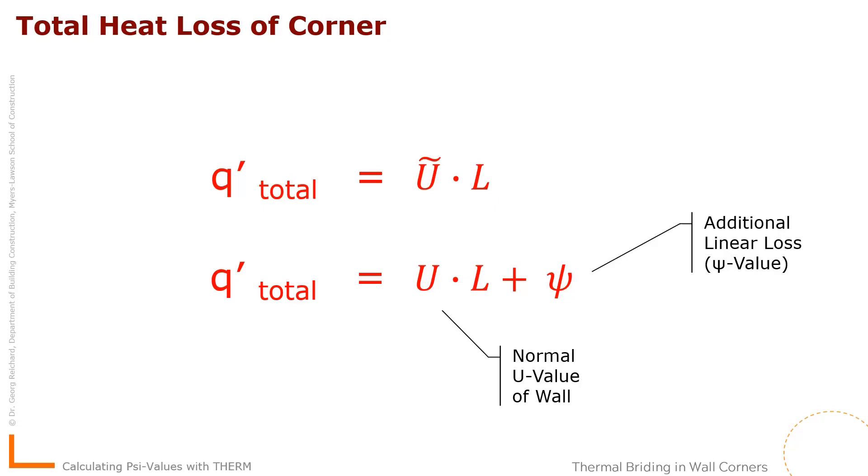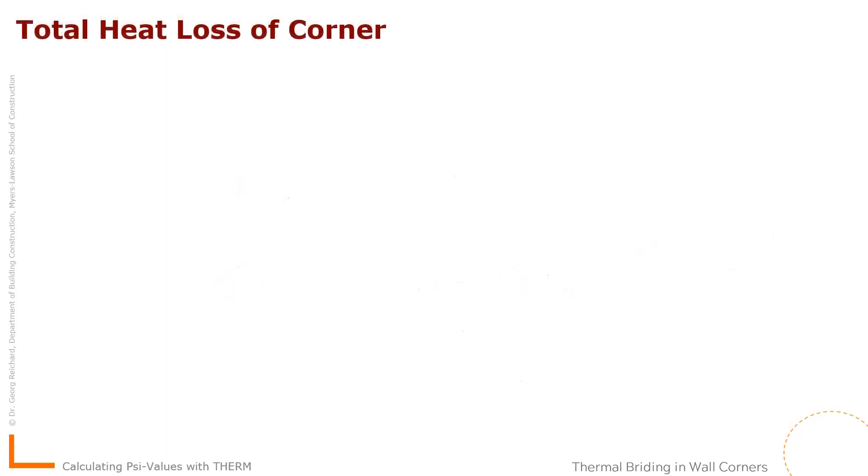So we see here we have two different totals and they are equal. So setting them against each other as equal, we can now then go ahead and isolate for Psi, which exactly shows what we explained before, that the Psi value is the difference between the average U value over this total length minus the simple U value. So basically just adding Psi to the simple solution will give us the total loss.